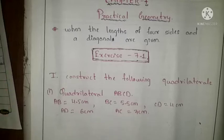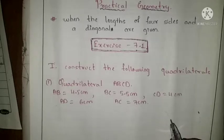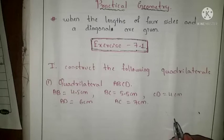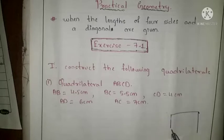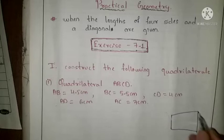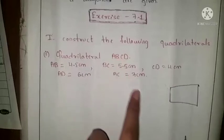The first step is to always start with a rough diagram. So first I will draw the rough sketch of the quadrilateral — we do not draw with exact measurements, we are going to draw just a rough sketch. First we have to draw the four sides of the polygon, that is a quadrilateral, and the name of the quadrilateral is ABCD.